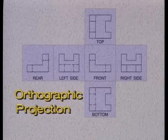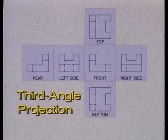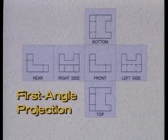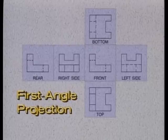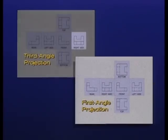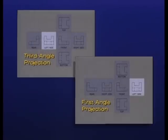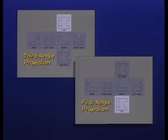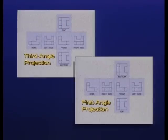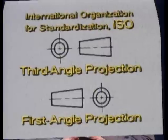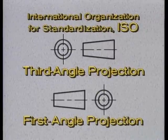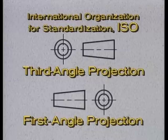There are two types of orthographic projection in use today. Third-angle projections, like this one, are used in the United States and Canada. First-angle projections are used in Europe and Asia. The difference between them lies in the arrangement of the views. For example, the right side view in a third-angle projection appears on the left side in a first-angle projection. The left side view appears on the right, and the top view appears on the bottom. Each one has been assigned a symbol by the International Organization for Standardization, abbreviated ISO.